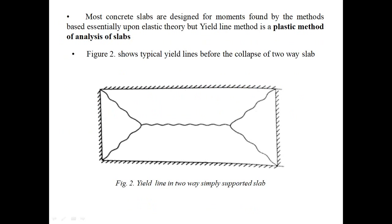Most concrete slabs are designed for moments found by methods based essentially upon elastic theory. But the yield line method is a plastic method of analysis of slabs. Conventional slab design uses elastic theory, while here we design the slab by the plastic method. Elastic means the material returns to its original shape after force is removed; plastic means the deformation is permanent. This theory is based on the plastic method.